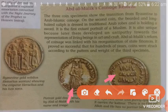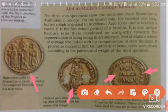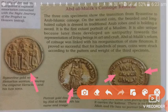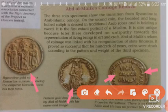The reform proved so successful that for hundreds of years, coins were struck according to the pattern and weight of the third specimen — a standardized coin that remained in circulation for a long period. The first coin is an early Arab coin where a depiction is visible. Later, no living creatures could be depicted in art and craft, so the third coin shows how only text material was used on the coins.